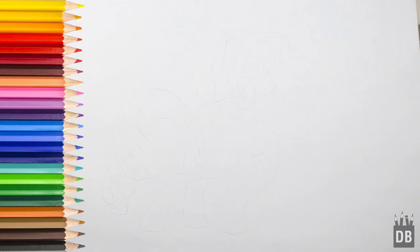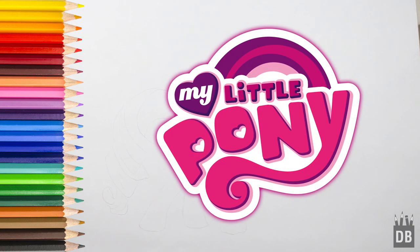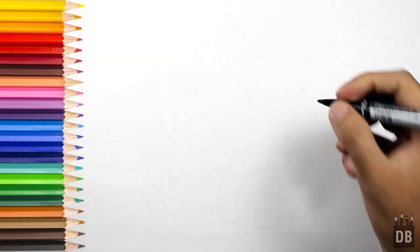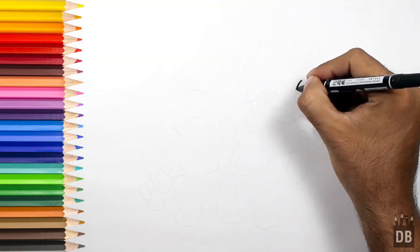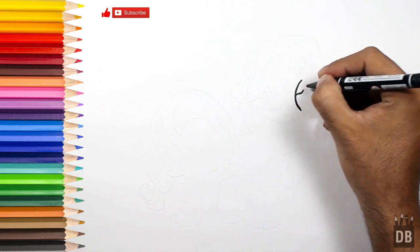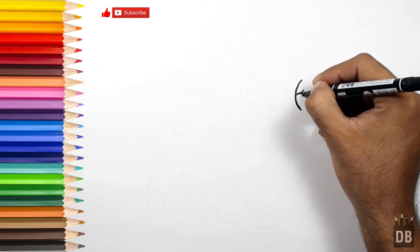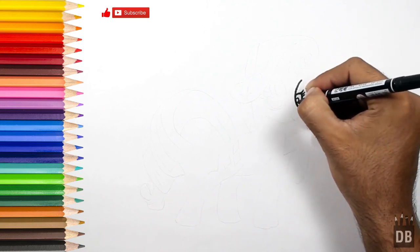Welcome to Drawing Box Studio, and today we are going to make Bonnie from My Little Pony. Let's draw. We will start from the eyes and make a curved line, and this is his eyebrows.